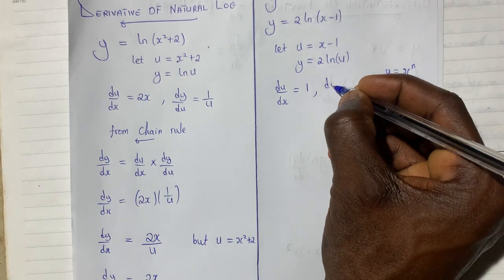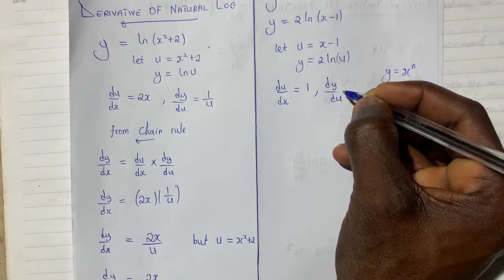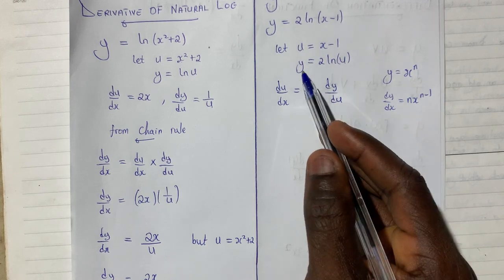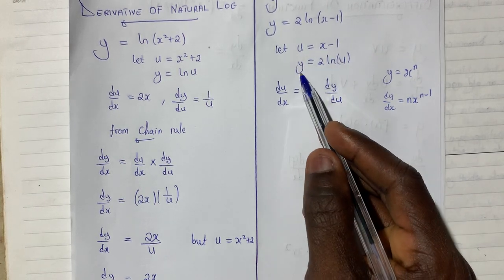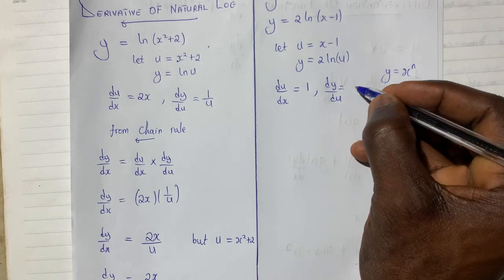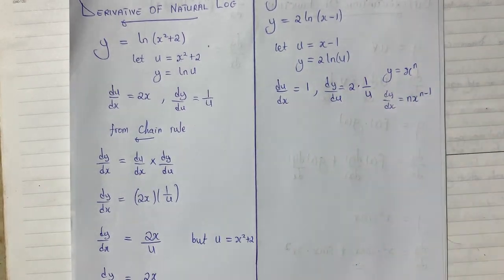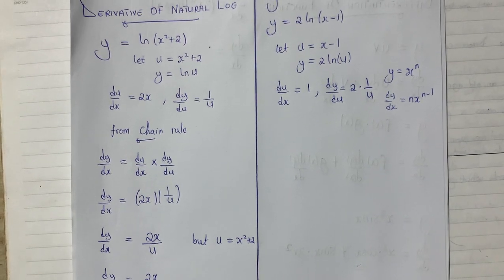Differential of this will give me dy du because it is y and u. I am differentiating y with respect to u. This becomes 2 times 1 over u.